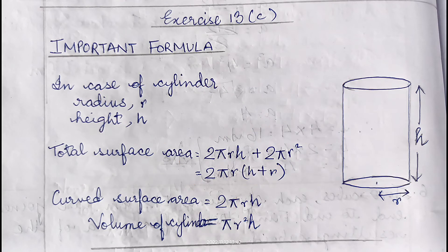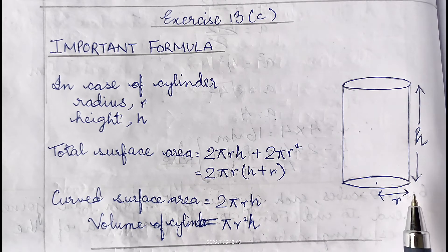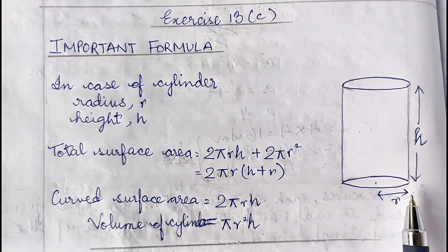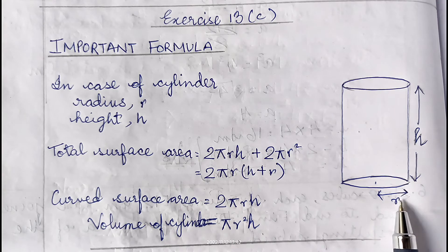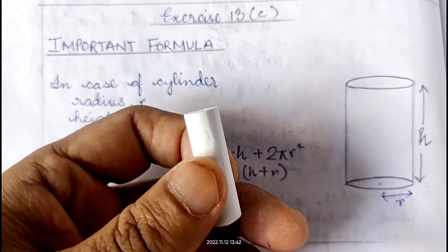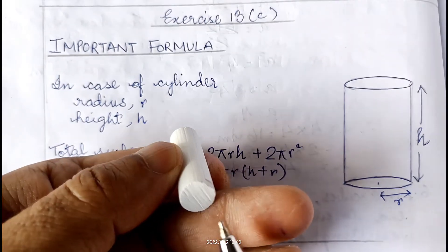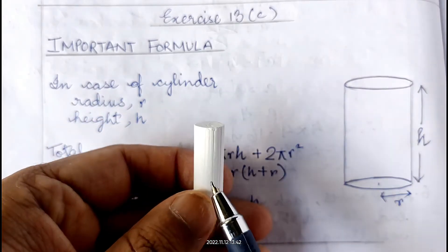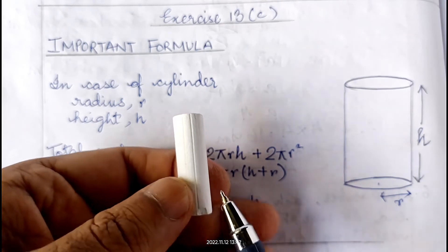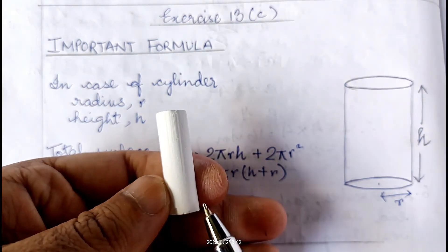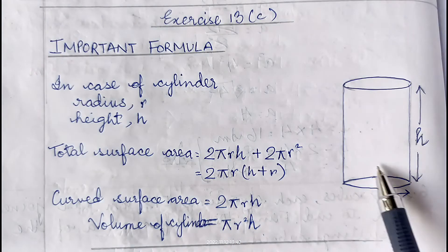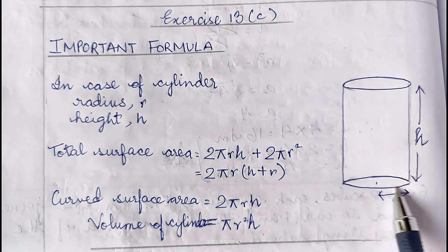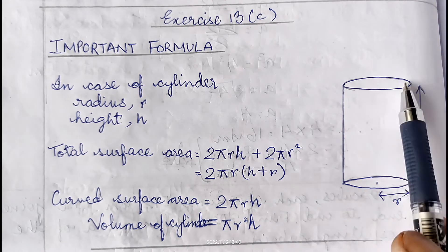Here we need formulas for cylinder and cone. A solid generated by the revolution of a rectangle about one of its sides is called a right circular cylinder. It has a circular top, a circular base, and a curved surface. The radius of the base is r and the height is h.